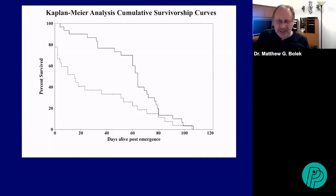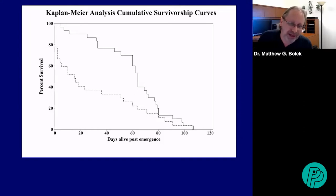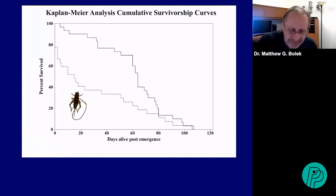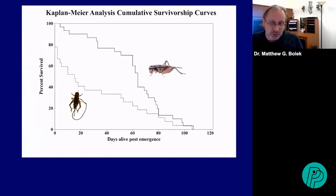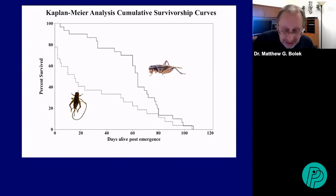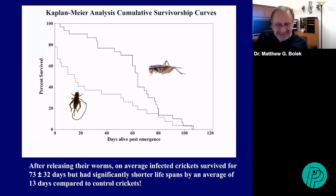What did Christina find? Looking at a cumulative survivorship curve — days alive post-emergence on the x-axis, percent survival on the y-axis — the dotted line represents infected crickets and the solid line represents control crickets. Clearly, crickets that were infected died more commonly than uninfected crickets. However, after releasing their worms, infected crickets survived on average 73 days, but had a significantly shorter lifespan — on average about 13 days shorter — compared to control crickets.